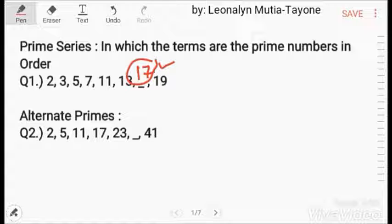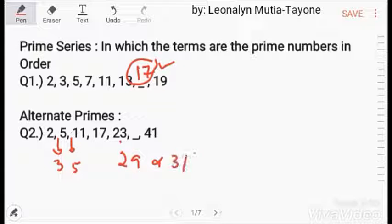Alternate primes. This one meron pa siyang 3. Meron pa siyang 5. Here the series is framed by taking the alternative prime numbers. After 23, the prime numbers are 29 and 31. So, the answer is 31.